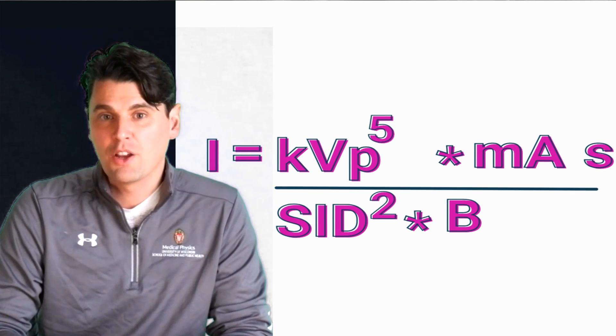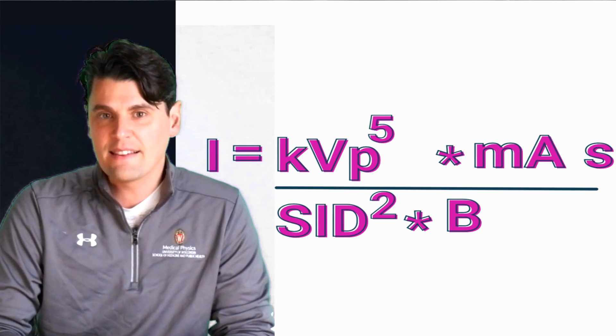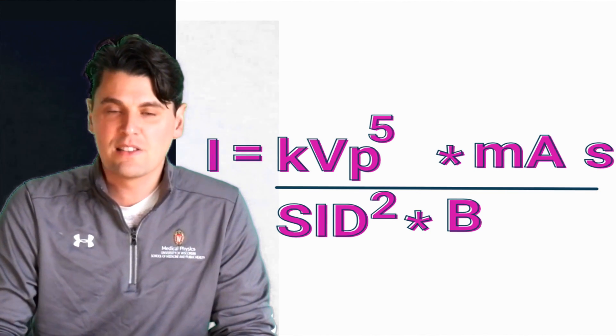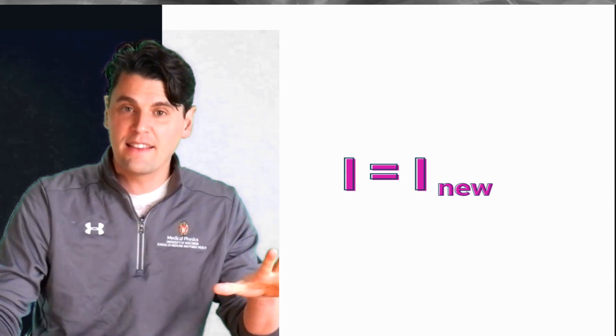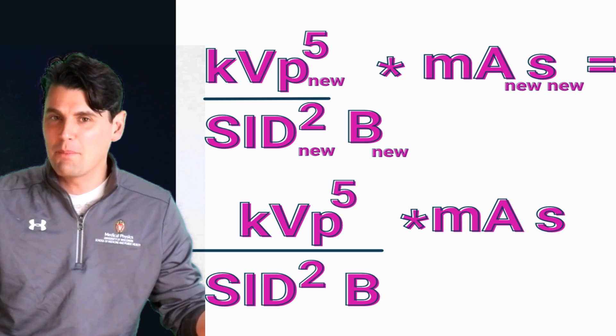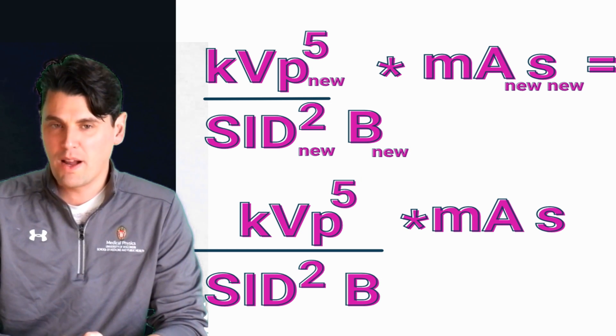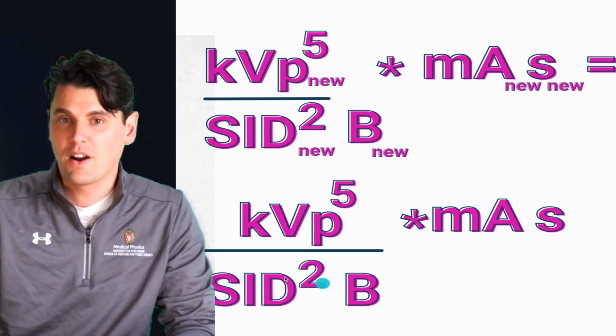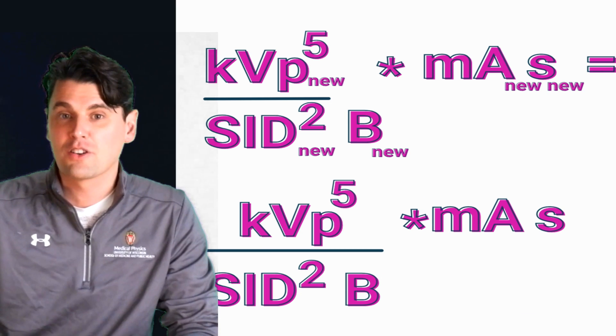The most important way to apply this equation when operating equipment is solving for time in seconds — that's the final knob you most often use to dial in exposure. Imagine we need to change some technical parameters, but we've already dialed in a good radiation dose. We don't want to change the exposure on the image receptor. So with an original set of parameters and a new set, we set the initial intensity equal to the new intensity.